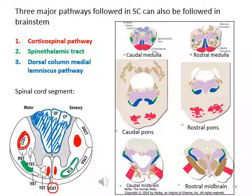Now we have learned three major pathways: the corticospinal pathway, and the DCML pathway. This final slide uses different colors to label the three pathways in cross-sections of the medulla, pons, and midbrain, so you can find the same-colored pathways inside the spinal cord and inside the brainstem.